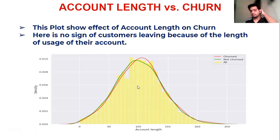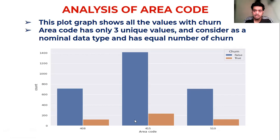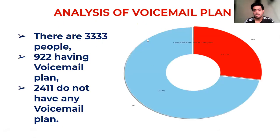The account length plot shows the relation between account length and churn — the red line represents churned customers and the blue line represents non-churned customers. There is no variance between the two groups and no sign that customers are leaving due to account length, so there is no meaningful relation. Similarly, for area code, there are only three unique area codes and the churn rate is almost the same across all three, yielding no actionable insight.